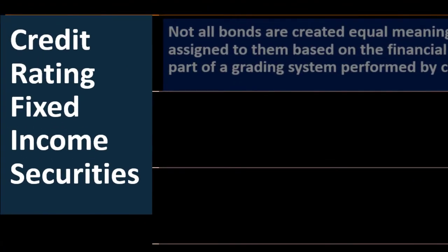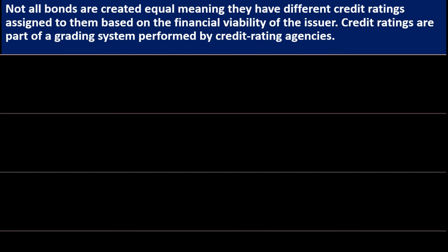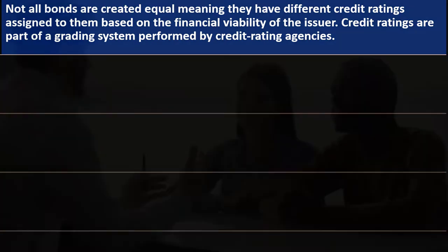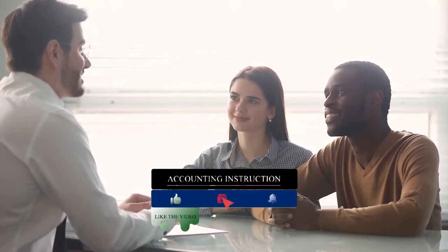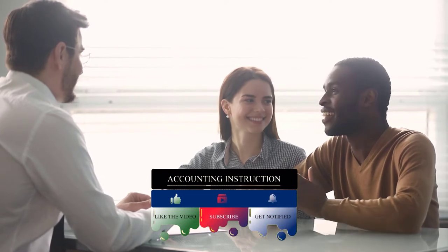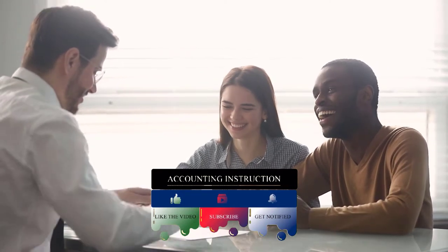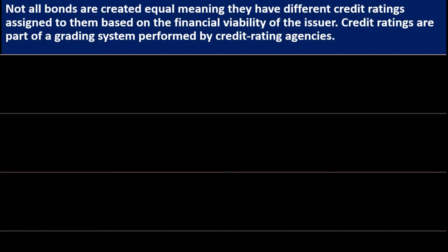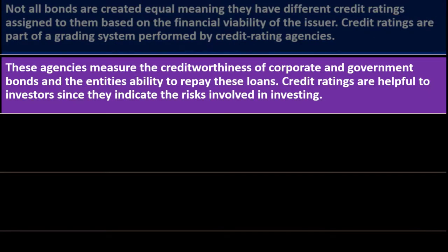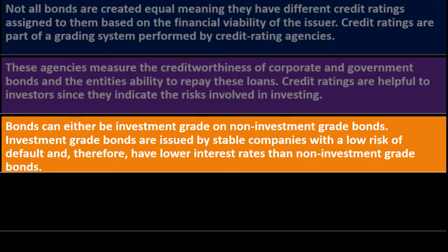Credit ratings: not all bonds are created equal — they have different credit ratings assigned based on the financial viability of the issuer. Just like a bank assessing your creditworthiness for a mortgage, you ask: what's the likelihood they'll default? Credit ratings are part of a grading system performed by credit rating agencies, which measure the creditworthiness of corporate and government bonds and the issuer's ability to repay. Credit ratings are helpful to investors since they indicate the risks involved.